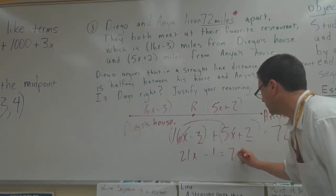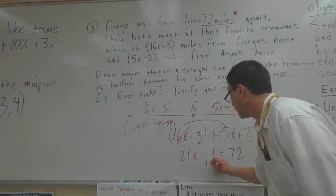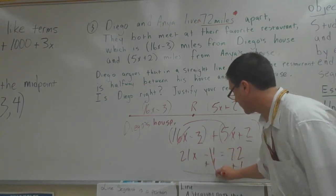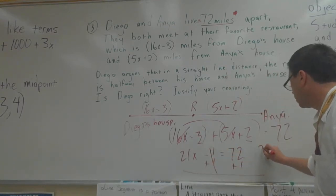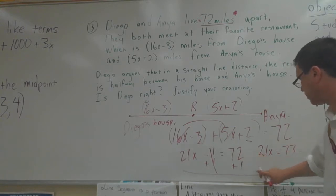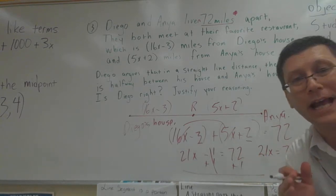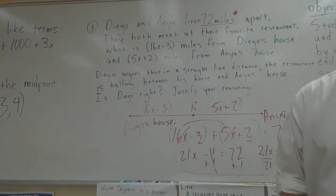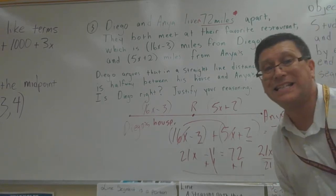Equals 72 plus 1 to both sides. See that? These cancel out. 21x equals 73. 72 plus 1 is 73. And how do we get x by itself? We simply divide by 21. I already did it. It is 3 and 10/21.